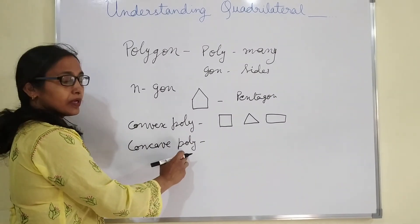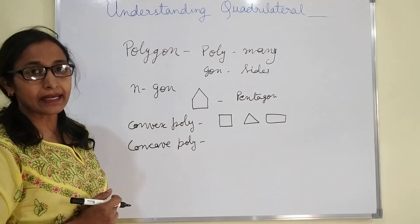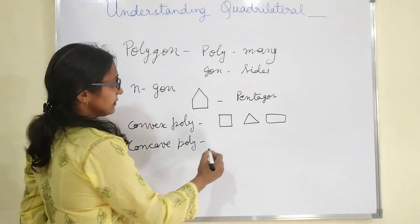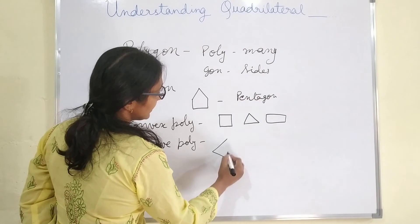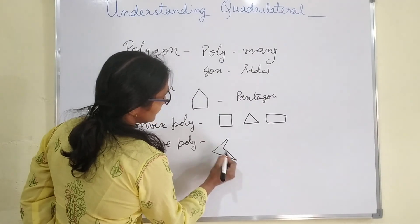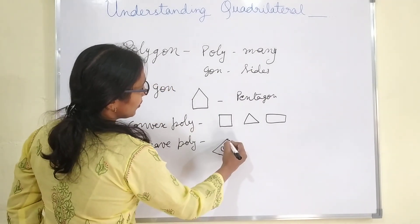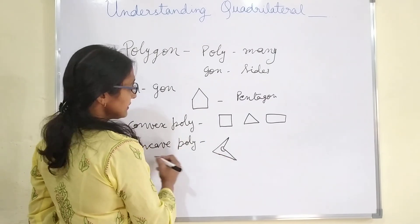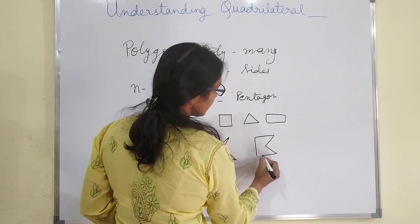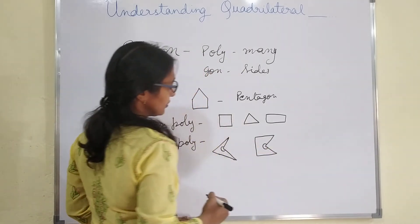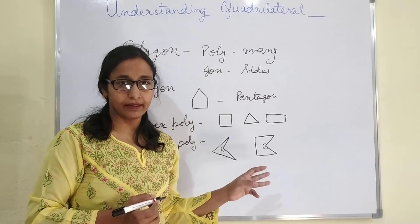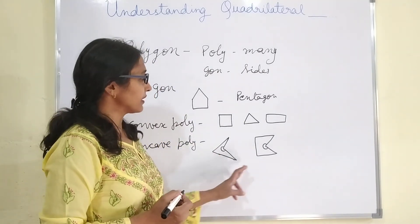And in a concave polygon, at least one angle is more than 180 degrees. For example, in this figure, this angle is more than 180 degrees. Another example: a reflex angle is forming here, and a reflex angle is more than 180 degrees. So these two figures are concave polygons.